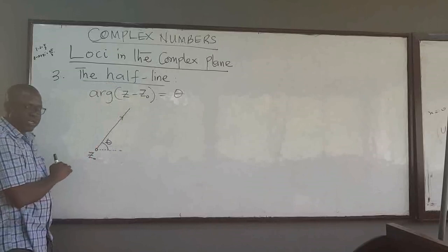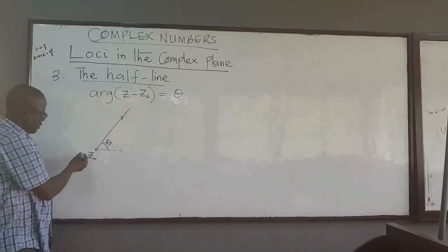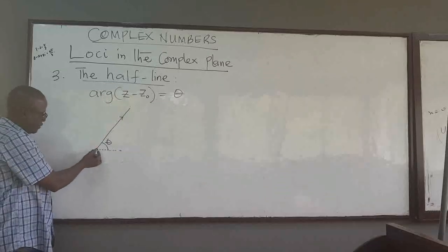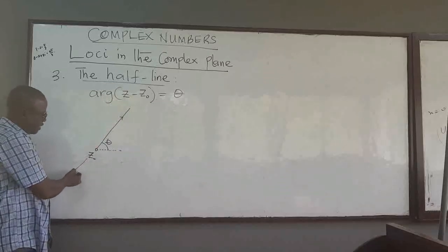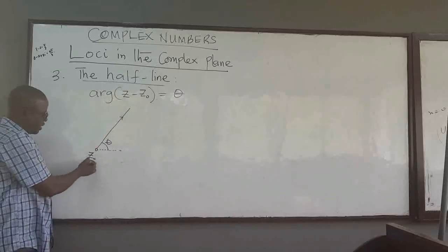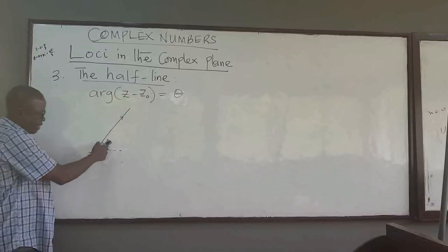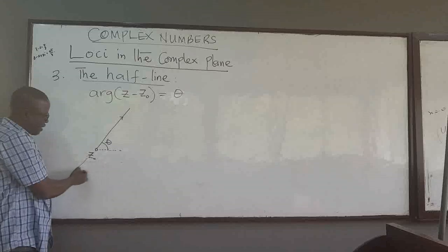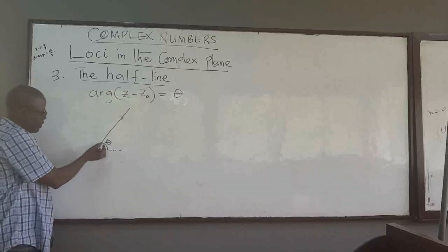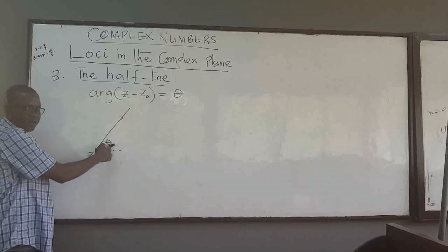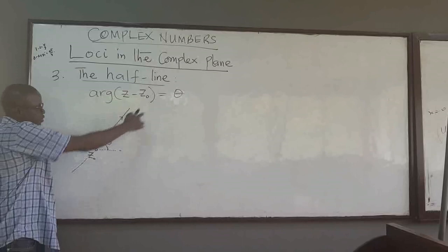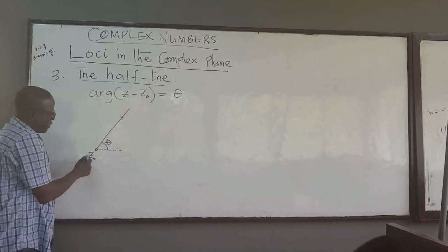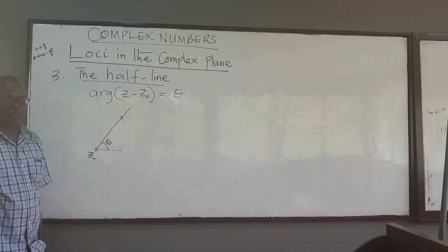Note that it is a half line because the other part of the line is not included. If you sketch a line in the opposite direction, that line does not make the same angle theta — it makes a negative angle or an angle different from theta. So for whatever fixed theta is, that is why it is called a half line.